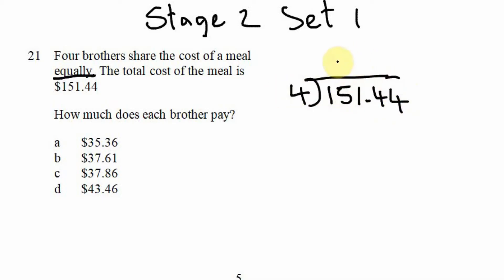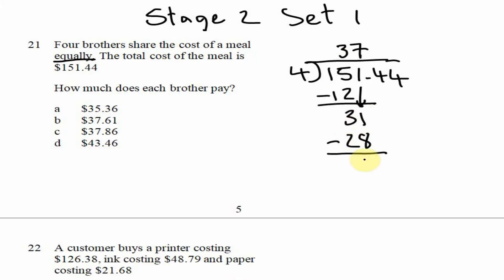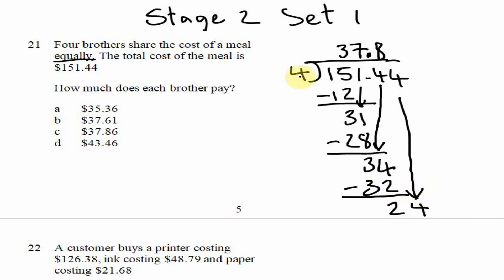Four into 15 goes 3 times; 3 × 4 = 12, 15 − 12 = 3. Carry down the 1: four into 31 goes 7 times; 7 × 4 = 28, 31 − 28 = 3. Four can't go into 3, so place the decimal point and bring down the 4: four into 34 goes 8 times; 8 × 4 = 32, 34 − 32 = 2. Carry down the 4: four into 24 goes 6 times; 6 × 4 = 24, remainder 0. Our answer is $37.86, which is option C.